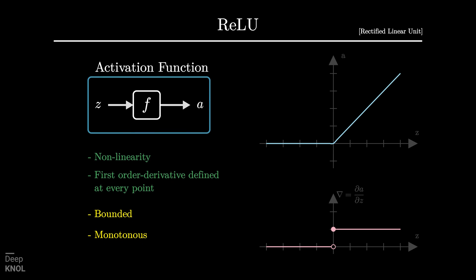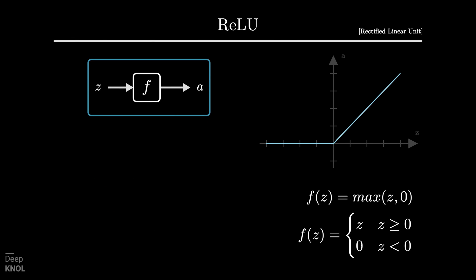There are two additional criteria that are sometimes mentioned: boundedness and monotonicity. Both of these are not strictly followed, like ReLU itself is not bounded for positive values of Z. And both Swish and Mish activation functions are exceptions to the case of monotonicity. We'll conclude this section by looking at how the value of ReLU varies for different values of Z. When Z is positive, it passes through unchanged, i.e., ReLU behaves like a pass-through function. And for negative Z, the output A dies to 0.